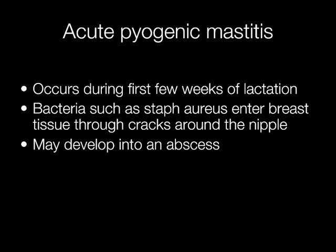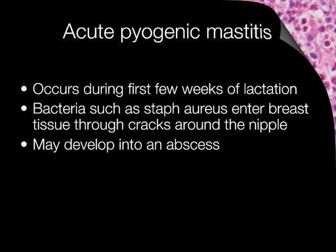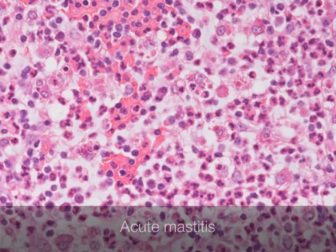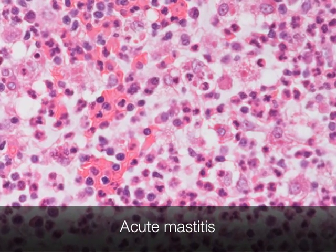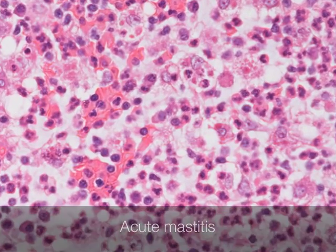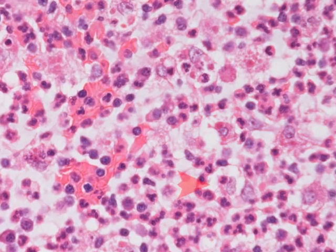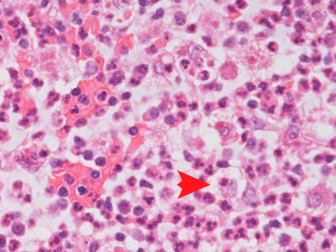Acute pyogenic mastitis occurs during the first few weeks of lactation. Bacteria such as Staph aureus enter the breast tissue through cracks around the nipple, and this may develop into an abscess. This is the histological appearance of acute pyogenic mastitis, with a heavy infiltrate of neutrophil polymorphs in the breast tissue.